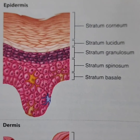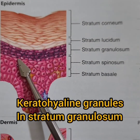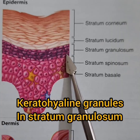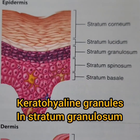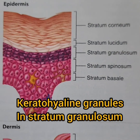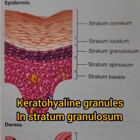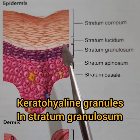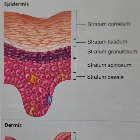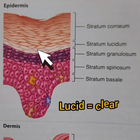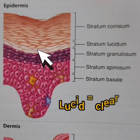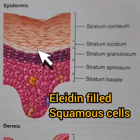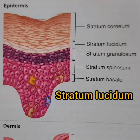The next layer of cells shows keratohyalin granules within the cytoplasm, making them appear darkly stained — so they are stratum granulosum. In this layer, cells start losing their nucleus and cytoplasm. Stratum lucidum appears clear and translucent because of the protein eleidin which fills these squamous cells. Eleidin is a precursor of keratin, and this layer is best observed only in thick skin.